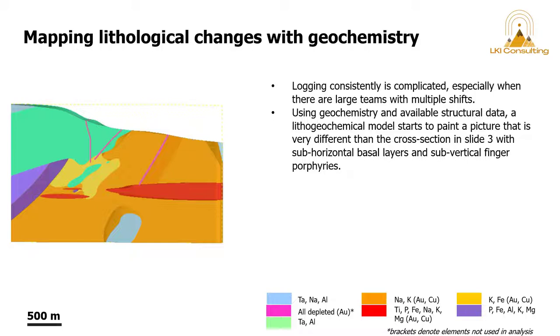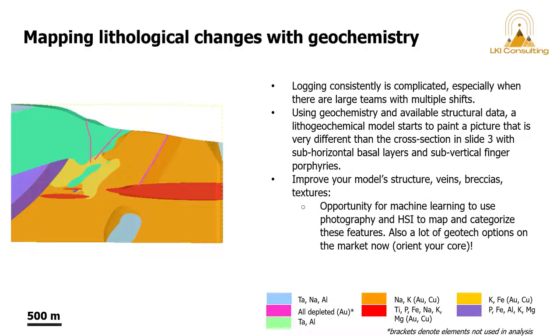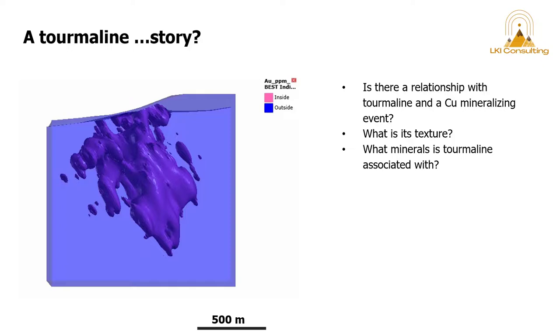And what I want to leave everyone with is to look at one of the lithogeochemical layers. It's a bit more in detail to see if there's a potential story in our mineralogy. So here, what we're wondering, is there a relationship with a tourmaline and a copper mineralizing event?